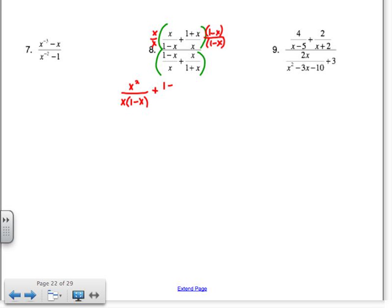So when you do that, you'd have x squared times x, or over x times 1 minus x, plus this would end up being 1 minus x squared all over x times 1 minus x.